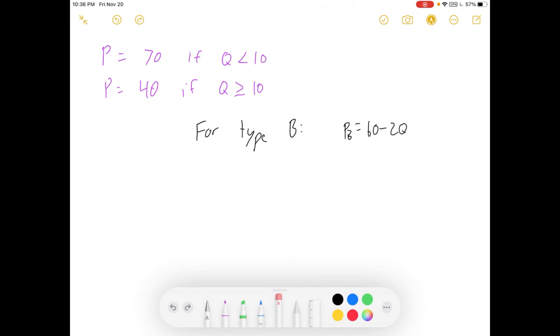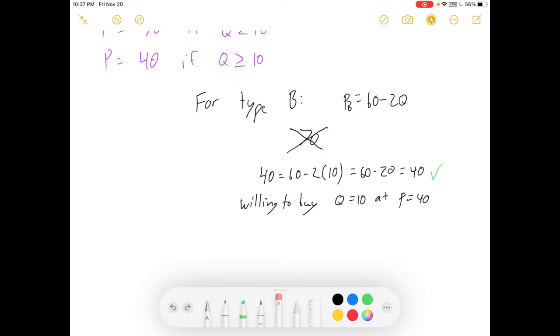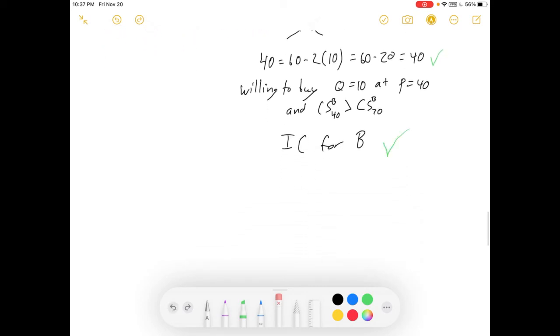So, for type B, we'll start with them because this is the easy one. Here's their demand curve. 60 minus 2Q is their price. Are they ever going to pay 70? No, it's above their willingness to pay. They will never buy a high price. Okay. So, that means they're going to choose the lower price, if any price. Let's check and see if the lower price is valid. 40 equals 60 minus 2 times Q is 60 minus 20 is 40. Hey, look. It's on or within our demand curve. So, they're willing to pay a price of 40 for 10 units of the good. They're not willing to pay 70. This is incentive compatible for person B or type B consumers. They're willing to do it. And the consumer surplus from B is greater than the consumer surplus for a high price. Yay.